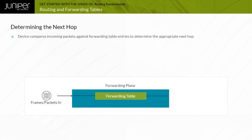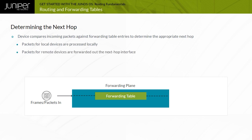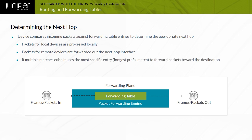When a packet enters a device running Junos OS, it compares that packet against the entries within the forwarding table to determine the proper next hop. If the packet is destined to the local device, Junos OS processes the packet locally. If the packet is destined to a remote device and a valid entry exists, the device running Junos OS forwards the packet out the next hop interface associated with the forwarding table entry. If multiple destination prefixes match the packet's destination, Junos OS uses the most specific entry, also called the longest prefix match. In situations where no matching entry exists, the device responds to the source with a destination unreachable notification.